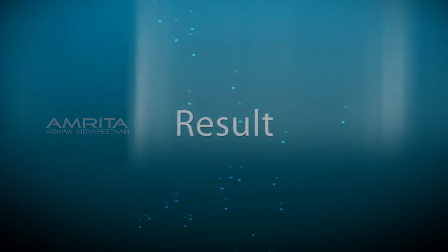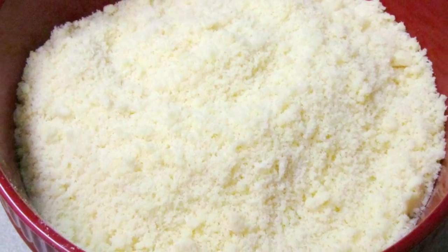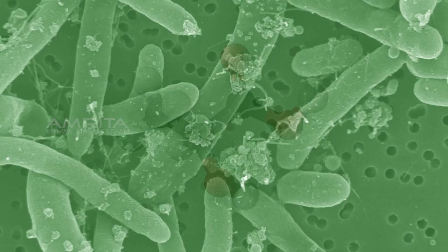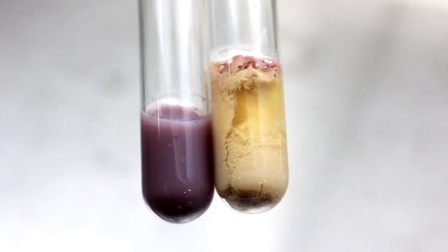Result: Escherichia coli convert the milk sugar lactose into lactic acid with the help of enzyme beta galactosidase. The medium turns pink due to curd formation and gas formation.